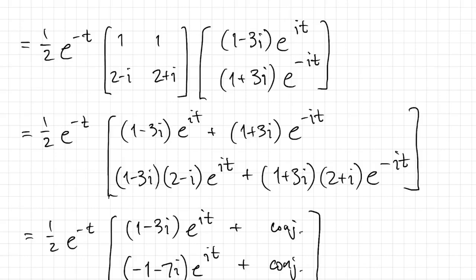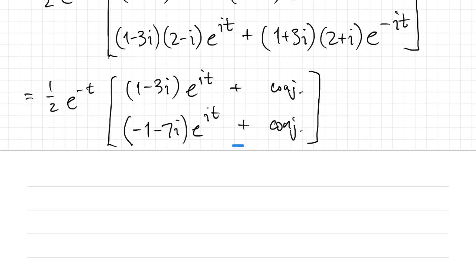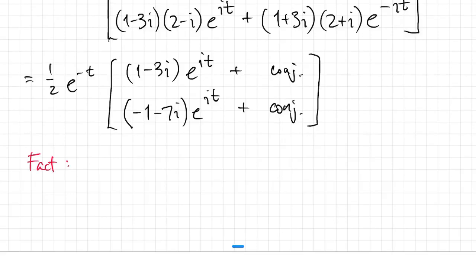That makes things easier because for any complex z, if you add z and its conjugate, you get 2 times the real part of z. Right? If you think of z as x plus iy, then you add x minus iy, you just get 2x.